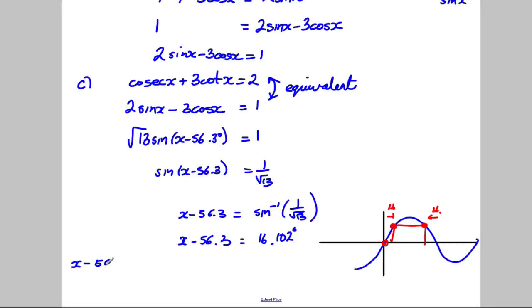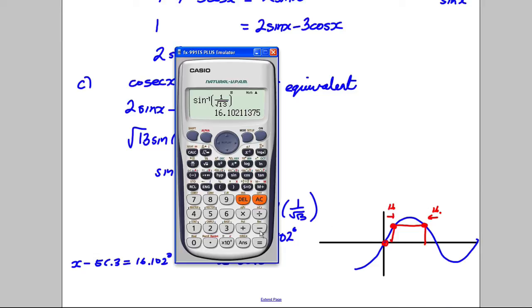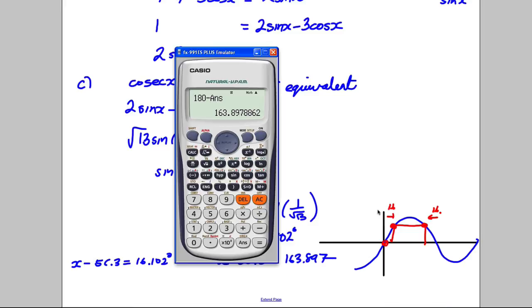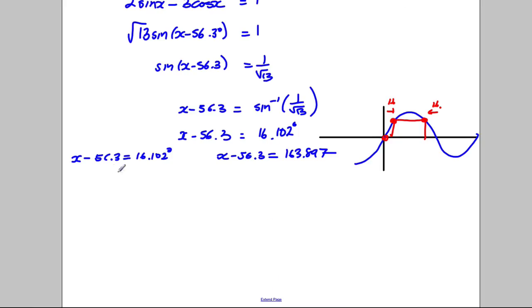So our two answers: we're going to solve x minus 56.3 equals 16.102, we're going to get a set of answers from that. And x minus 56.3 is going to be 180 take away that. I'm going to say 180 take away that which is 163.897. So 163.897. So there are two answers.